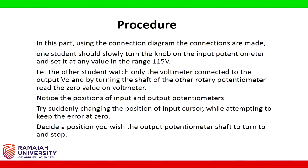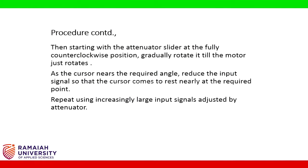Then, one student should slowly turn the knob on the input potentiometer and set it at any value in the range plus or minus 15 volts. Let the other student watch only the voltmeter connected to the output V0, and by turning the shaft of the other rotary potentiometer, read the zero value on the voltmeter. Notice the position of input and output potentiometers. Try suddenly changing the position of input cursor while attempting to keep the error at zero. As the cursor nears the required angle, reduce the input signal so that the cursor comes to rest nearly at the required point.